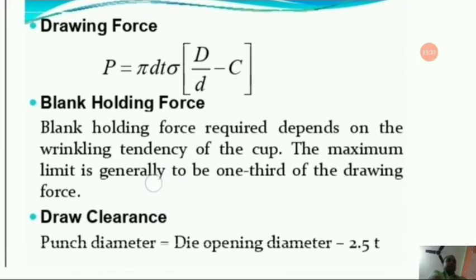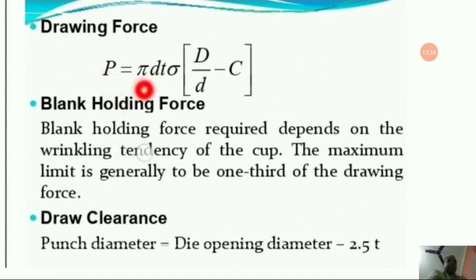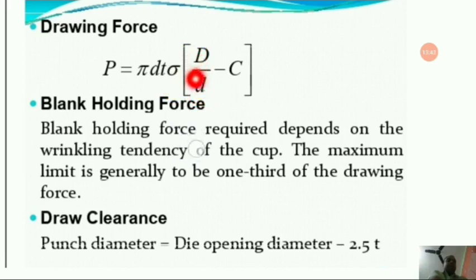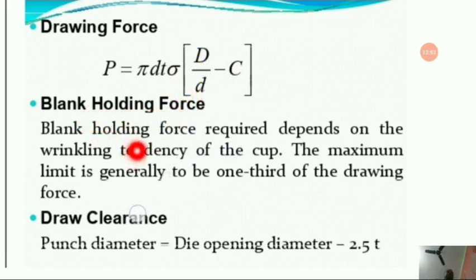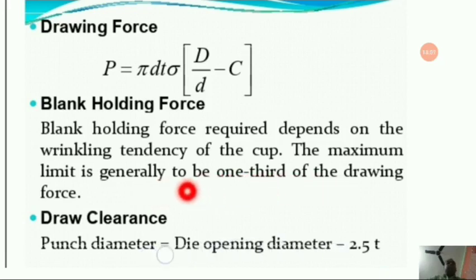Drawing force is given as p = π·d·σ·(D/d − c), where c is the clearance. The blank holding force depends on the wrinkling tendency of the cup; its maximum limit is generally one-third of the drawing force. Draw clearance: punch diameter = die opening diameter − 2.5 × thickness.